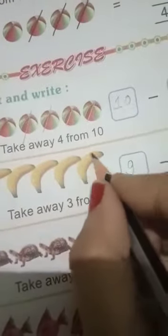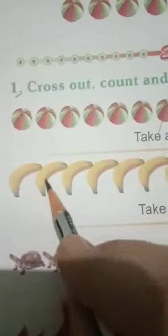Take away 3 from 9. How many to take away? 3. Write down 3 in the next box. Now count: 1, 2, 3, 4, 5, 6. Your answer is 6. 9 minus 3 is equal to 6.